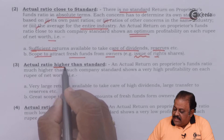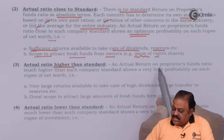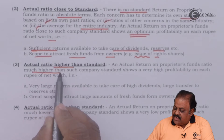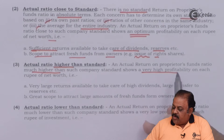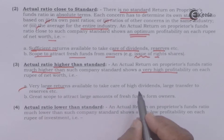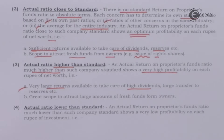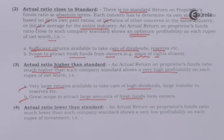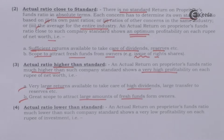An actual return on proprietors fund ratio much higher than the company standard shows very high profitability on each rupee of net worth — that is, very large returns available to take care of high dividends and large transfers to reserves, with great scope to attract large amounts of fresh funds from owners. For example, if the industry standard is 12 percent and the company's return on proprietors fund ratio is 18 percent, more investment can easily be attracted to such a company.